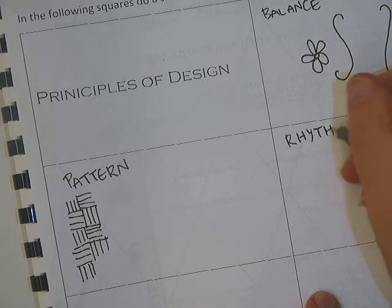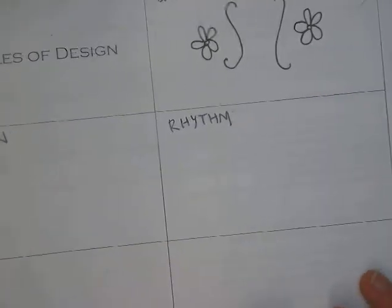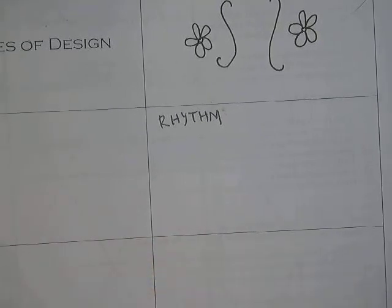Okay. There's also rhythm. Rhythm and pattern are close to the exact same thing. Pattern is a repetition and rhythm also has a repetition of an element, but it is irregular.